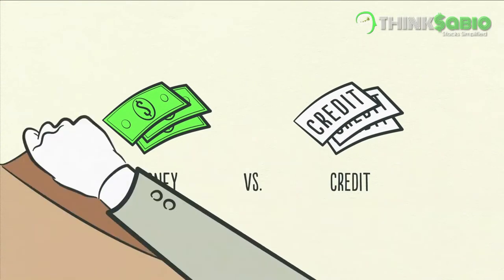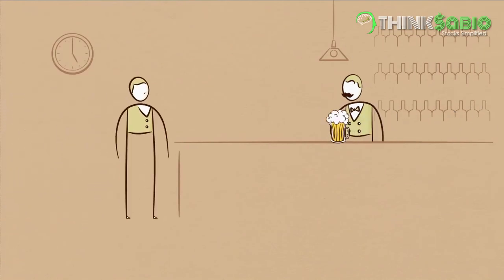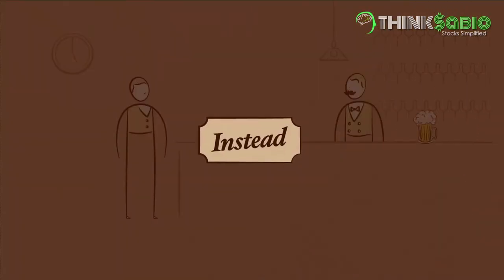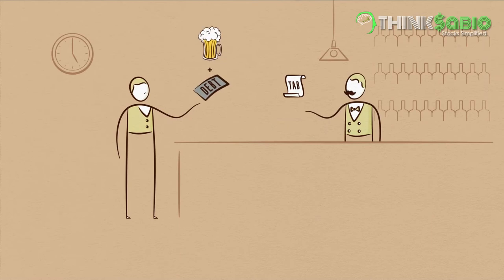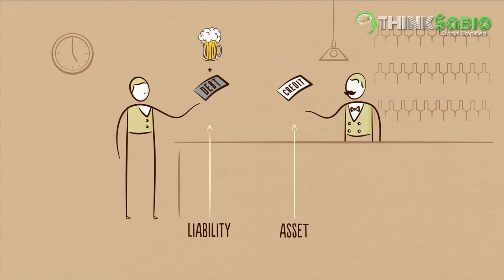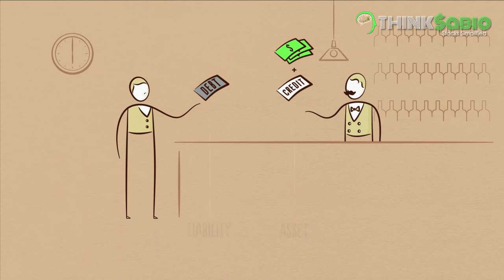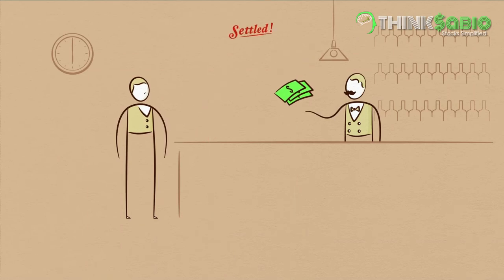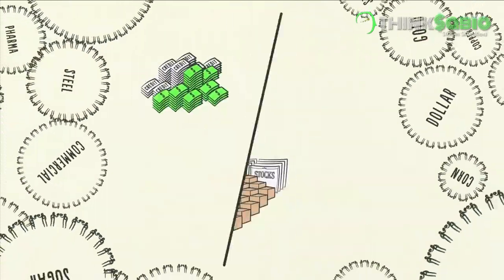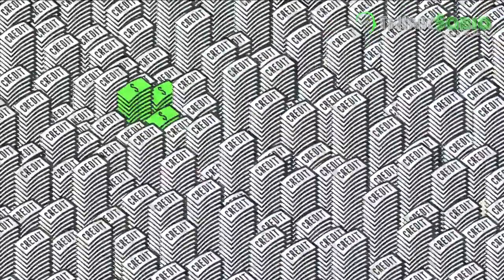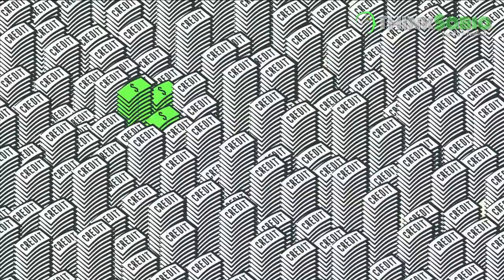Money is what you settle transactions with. When you buy a beer from a bartender with cash, the transaction is settled immediately. But when you buy a beer with credit, it's like starting a bar tab — you're saying you promise to pay in the future. Together, you and the bartender create an asset and a liability. You just created credit out of thin air. It's not until you pay the bar tab later that the asset and the liability disappear, the debt goes away, and the transaction is settled. Most of what people call money is actually credit. The total amount of credit in the United States is about $50 trillion, and the total amount of money is only about $3 trillion.